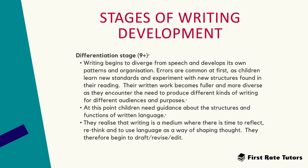The next stage is the differentiation stage, happening at nine years and older. Here, writing begins to diverge from speech and develops its own patterns and organisation. Although errors are common at first, children make fewer and fewer errors as they learn new standards and experiment with new structures. Their written work becomes fuller and more diverse, and they encounter the need to produce different kinds of writing for different audiences and purposes — tied in to understanding the different functions of writing. At this point children need guidance about structures and functions of written language, and they realise that writing is a medium where there's time to reflect, rethink, and use language as a way of shaping thought. They thus begin to draft, revise and edit.